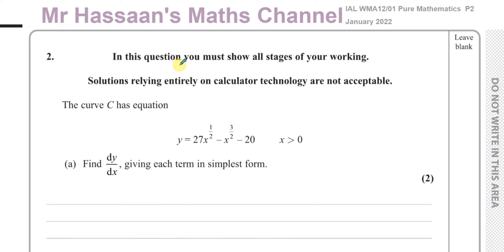Welcome back to Mr. Hassan's math channel. I'm now going through question number two from the January 2022 Pure Mathematics P2 International A-Level Edexcel paper. This question is about the curve y equals 27x to the power of a half minus x to the power of 3 over 2, minus 20, where x is greater than 0.